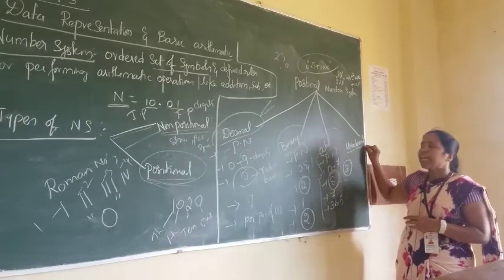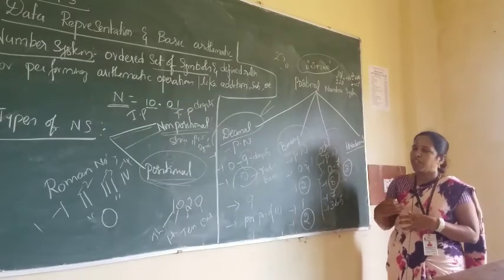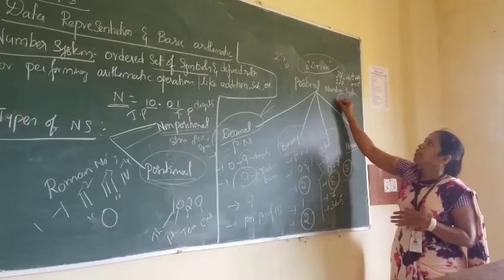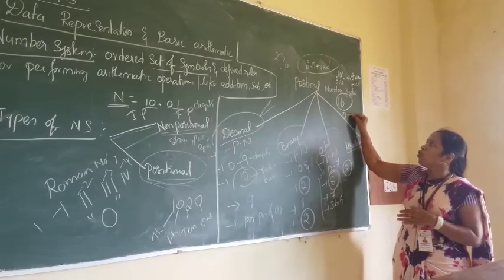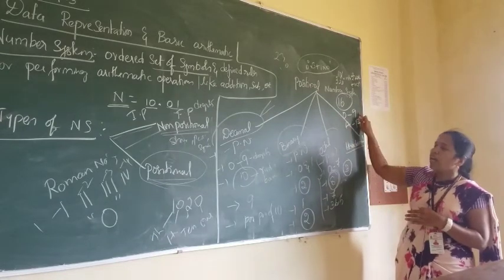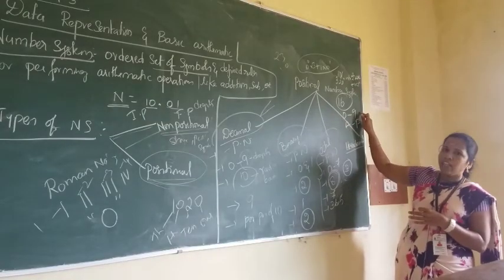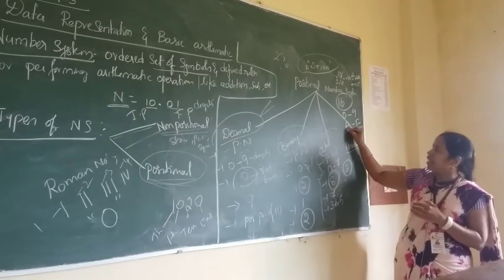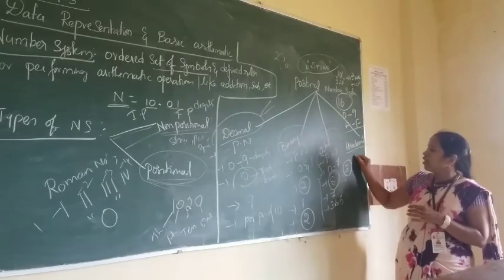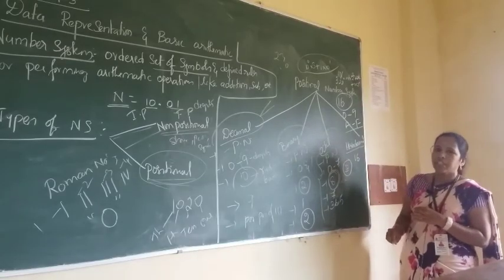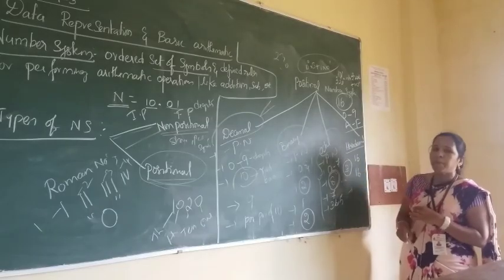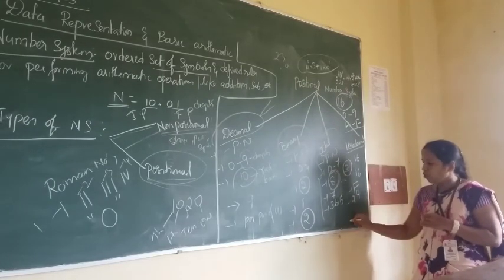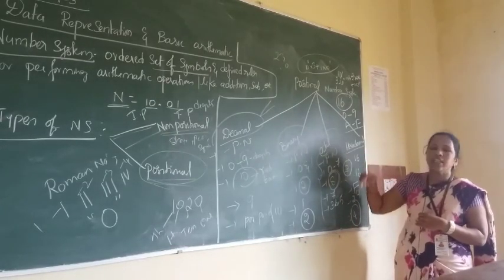The hexadecimal number system is a positional number system that uses 16 symbols: 0 to 9 and A to F. The digits 0 to 9 represent values 0 through 9, and A through F represent values 10 through 15. The base is 16, and the maximum value is F. Since 16 equals 2 to the power of 4, four bits are used for representing a hexadecimal digit in binary form.